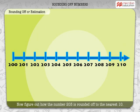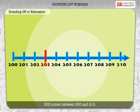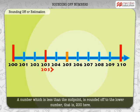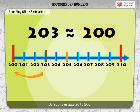Now figure out how the number 203 is rounded off to the nearest 10. 203 comes between 200 and 210. The midpoint between 200 and 210 is 205. A number which is less than the midpoint is rounded off to the lower number — that is 200 here. So, 203 is estimated to 200.